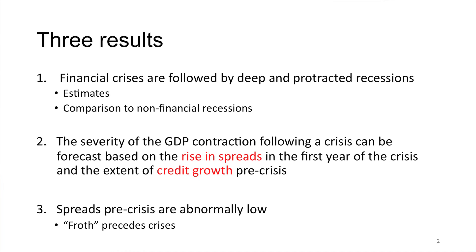Result two: suppose you're in a crisis — not about forecasting whether a crisis will happen, but observing the evolution of the crisis. We have about 45 financial crises in our sample, a cross-section with differing severity. I'll show that you can explain the severity of financial crises fairly well with two variables: one is the rise in spreads in the first year of the crisis, which captures something like credit losses on financial sector balance sheets, and the extent of credit growth pre-crisis, which captures something like leverage of the financial sector.